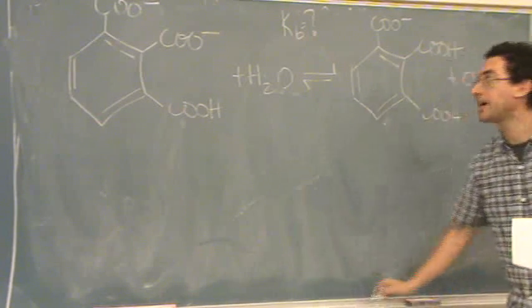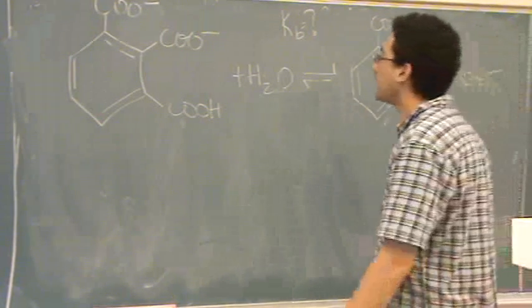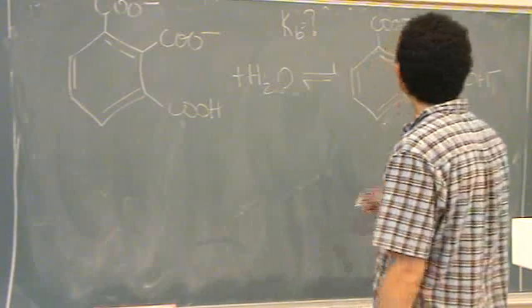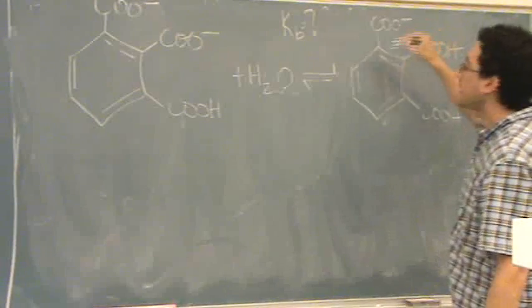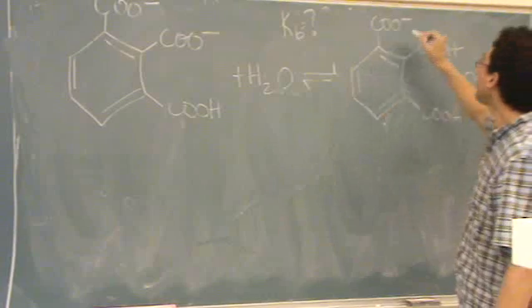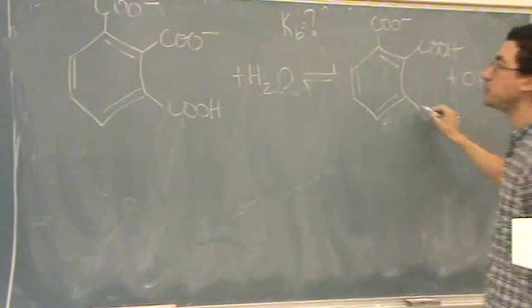So all you have to identify is it gives you Ka1, Ka2, Ka3. Notice because there's three hydrogens, it could be lost.